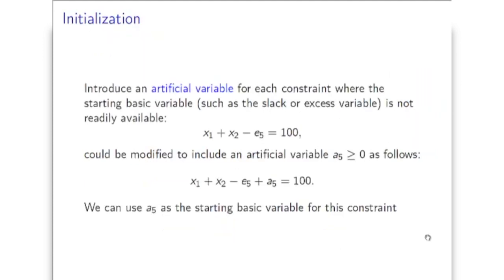One potential solution is to introduce the so-called artificial variable. This was the fifth constraint of the last example we considered. The reason we cannot use the excess variable as our basic variable for this constraint is because the sign is not what we want here - it's negative. If it was a plus, then we would have e5 equal to 100 and this would be fine. However, the sign is negative and we cannot use this variable directly as the basic variable.